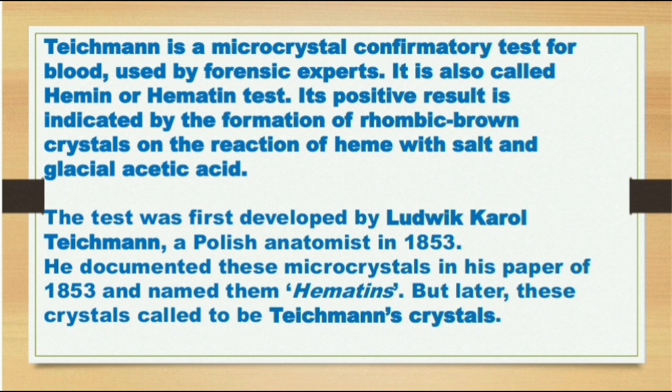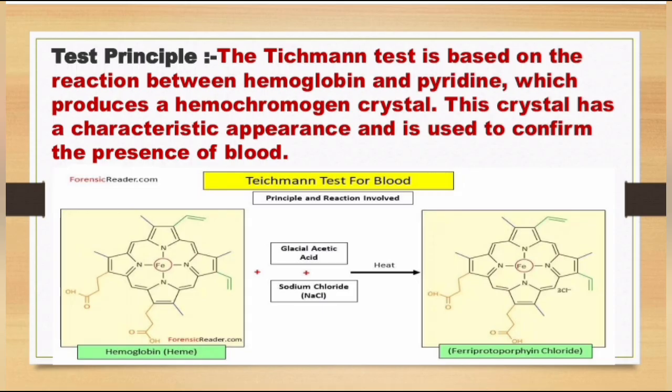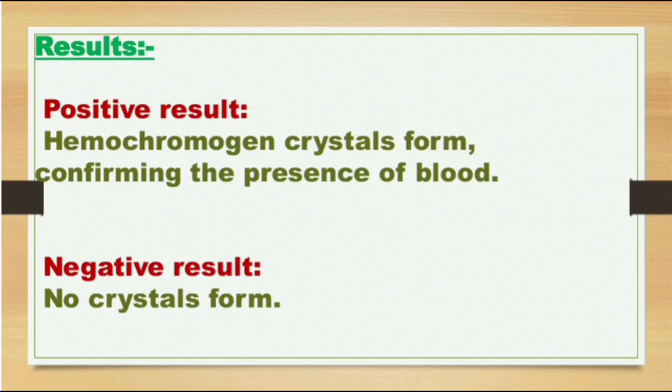He documented these microcrystals in his paper of 1853 and named them hematines. But later these crystals were called Teichmann crystals. The Teichmann test is based on the reaction between hemoglobin and pyridine, which produces hemoglobin crystals. These crystals have a characteristic appearance and are used to confirm the presence of blood.